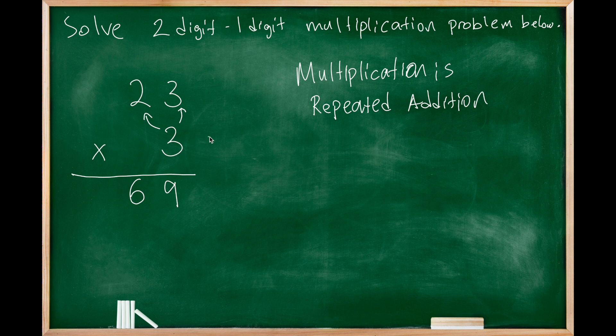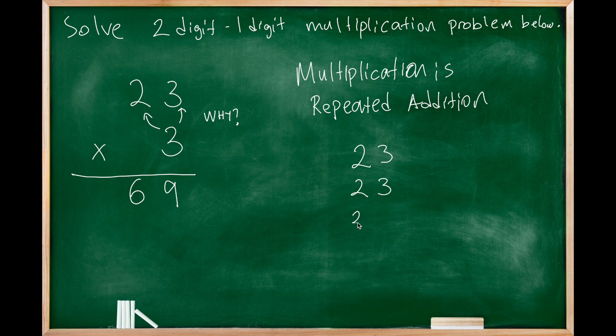But why? Why do we do it this way? Why do we multiply these digits? Let's explain here. As we said, it is repeated addition. So basically, multiplying 23 by 3 is adding 23 repeatedly with each other three times.